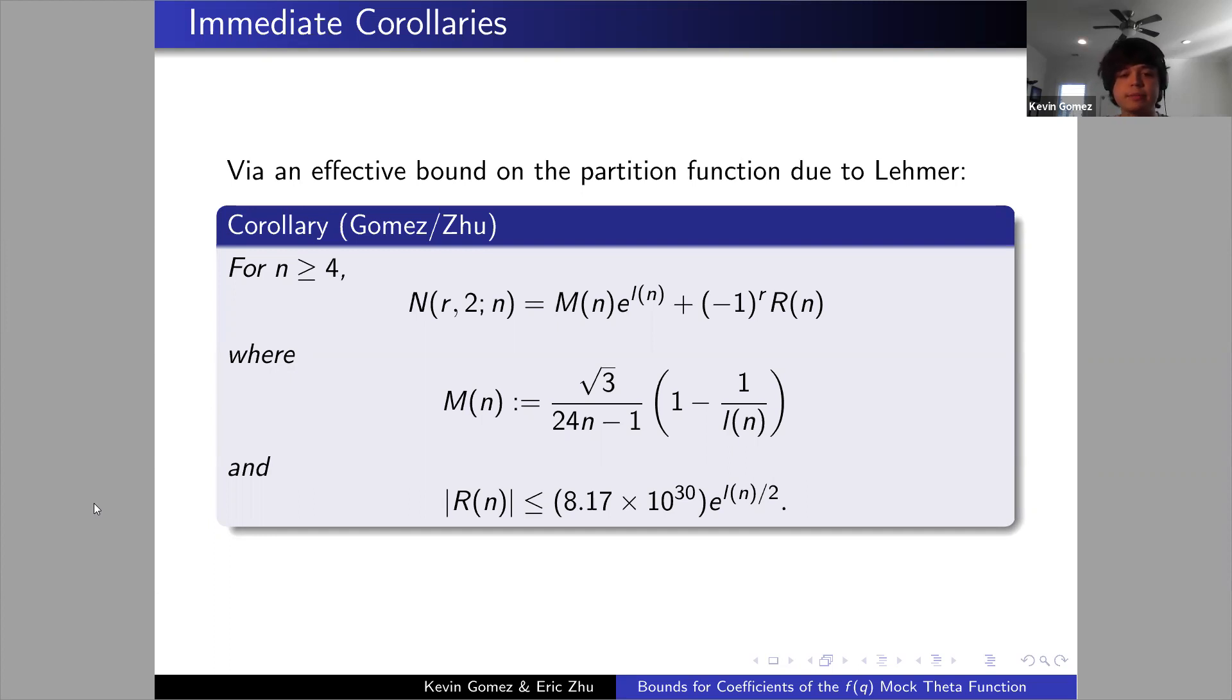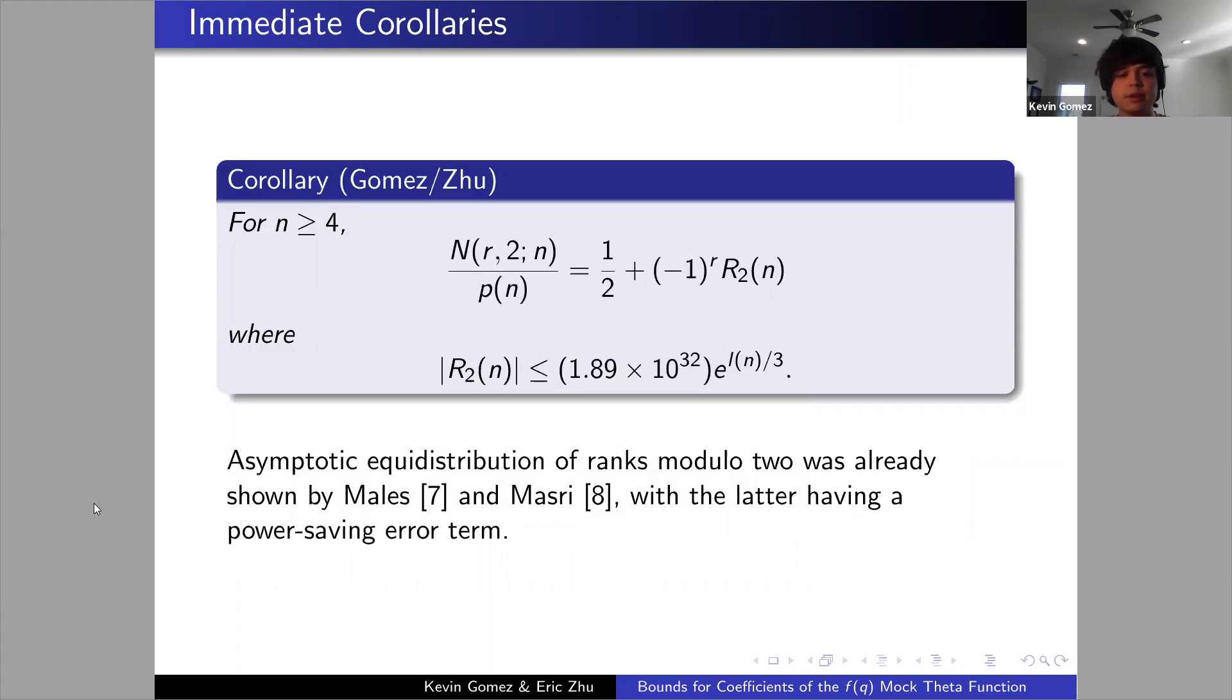Another nice corollary that we get is that for n greater than or equal to 4, we're able to obtain effective equidistribution of the ranks modulo 2. If we take the ratio, we get that it is one half with an effective error term. Asymptotic equidistribution of the ranks modulo 2 was already shown by both Maleş and Masri, the latter having a power saving error term. But this is an effective result, which is something we weren't necessarily expecting but makes sense in hindsight that it would fall out as a similar result given that we were trying to obtain effective bounds for alpha_n.